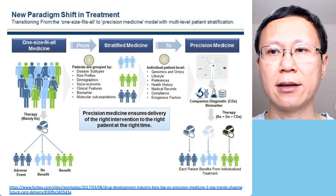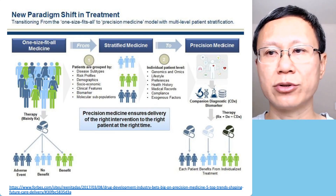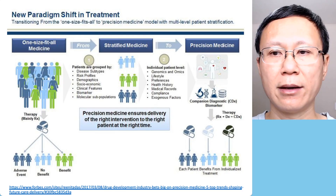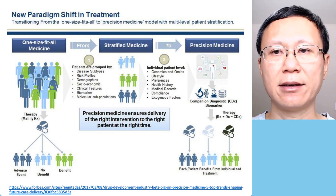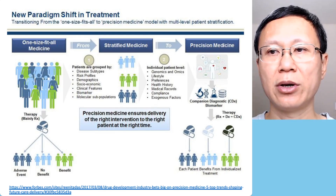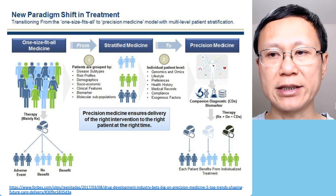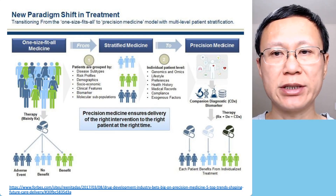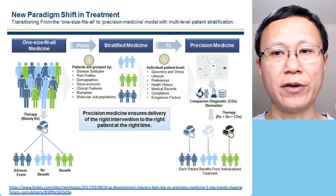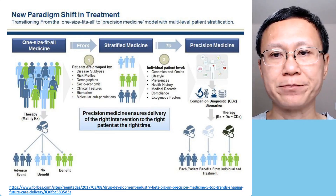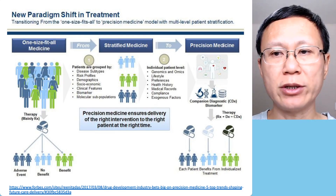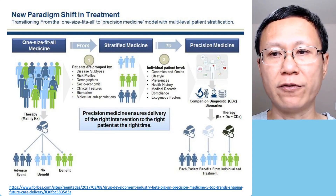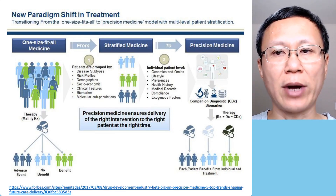It needs multiple-level patient stratification. In order to implement stratified medicine and precision medicine, we need to understand the patients, we need to understand the medicine, and we need to understand the process of fighting against diseases. Therefore, we need a lot of data. Precision medicine tries to ensure the delivery of the right intervention to the right patient at the right time.